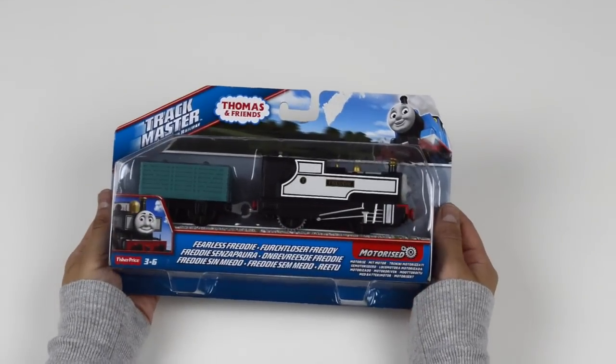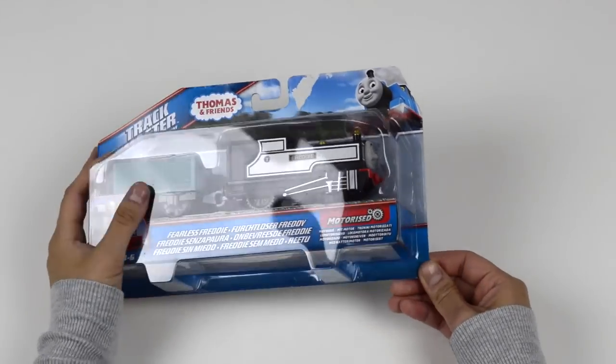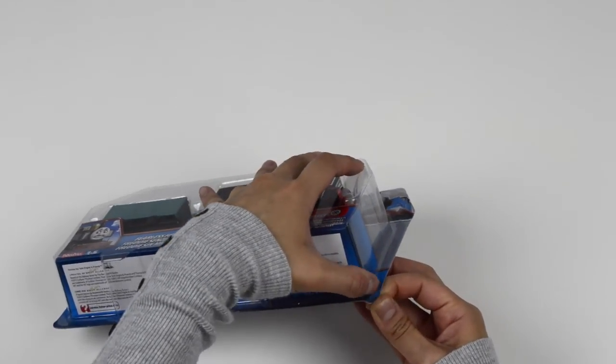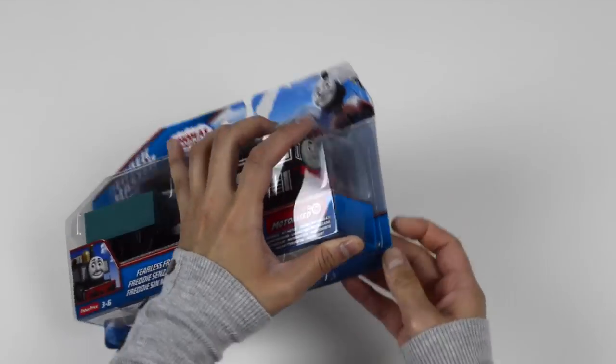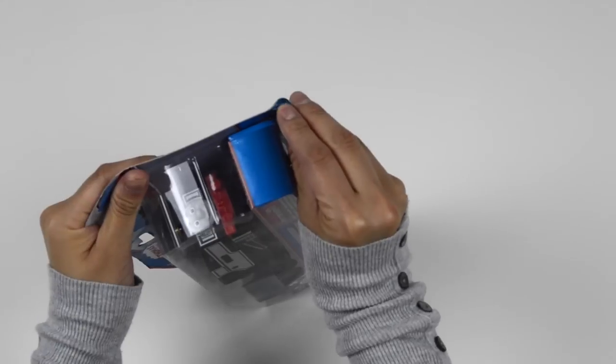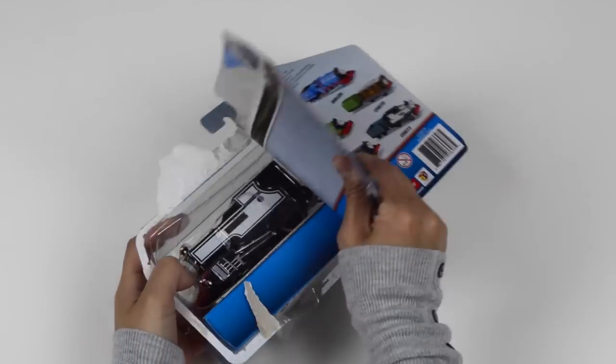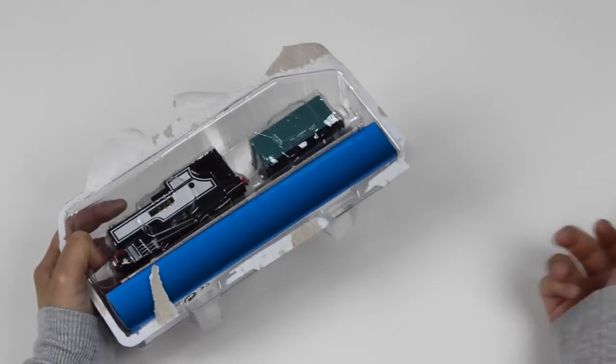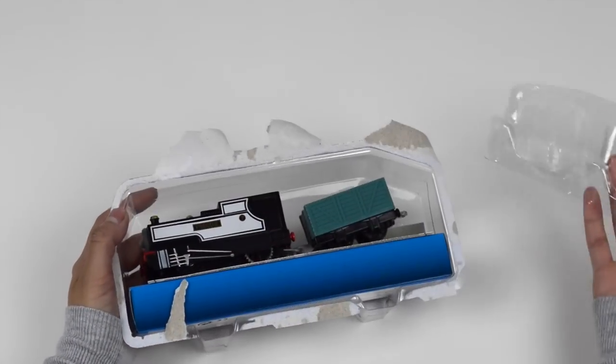So now we're ready to unbox this train. It has the easy rip-open tab. Once that's done, we can remove the plastic sheet.